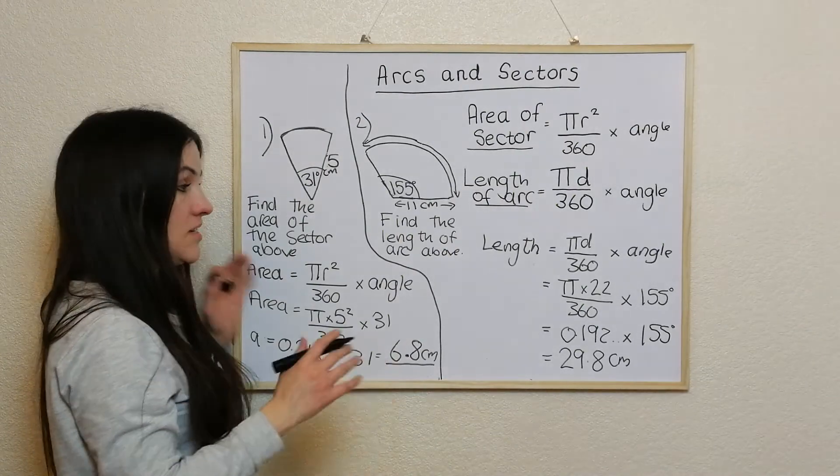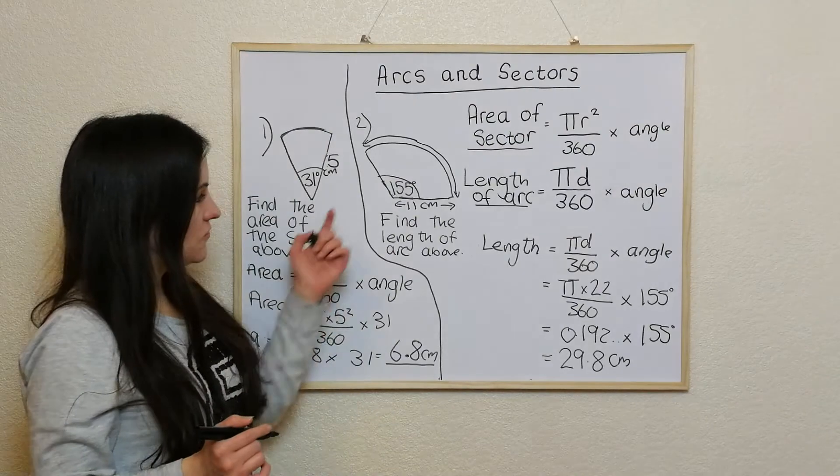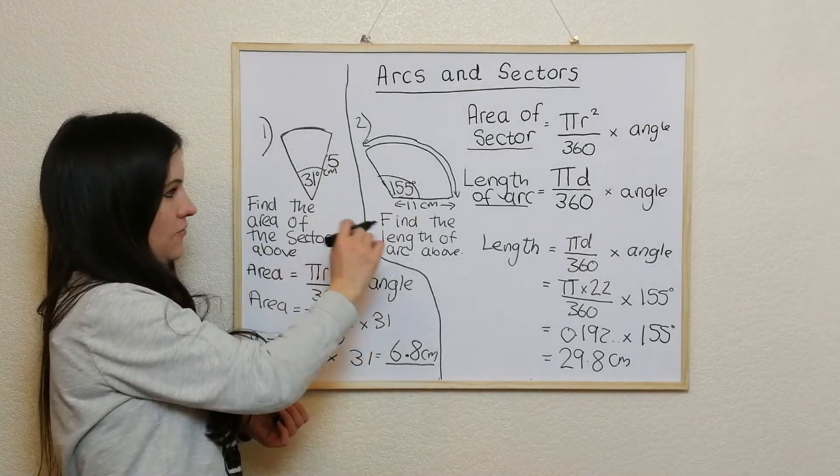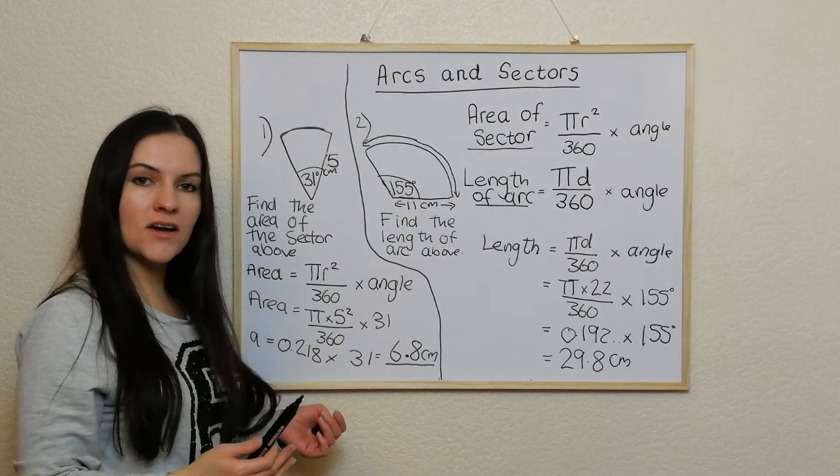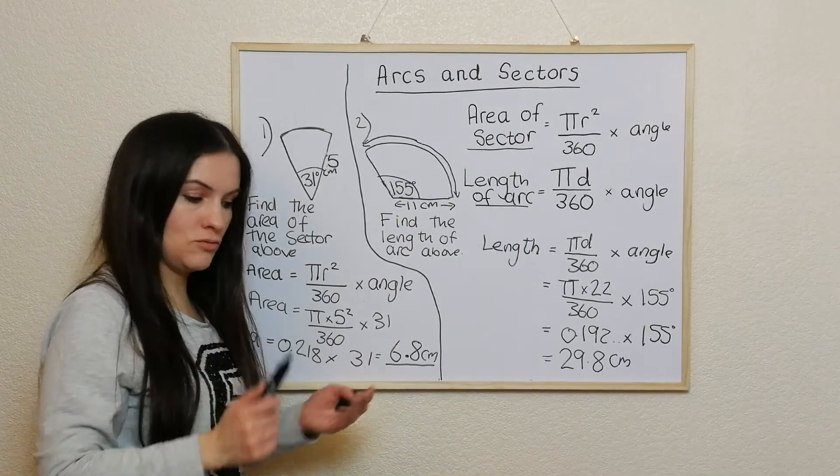So these are probably easier ones. We're going to show the next set where you've actually got to find the angle. So you're being given, if you like, the answer. You're being given the area or the length of the arc, but you've got to work backwards to get the angle. So that's what we're going to do next.